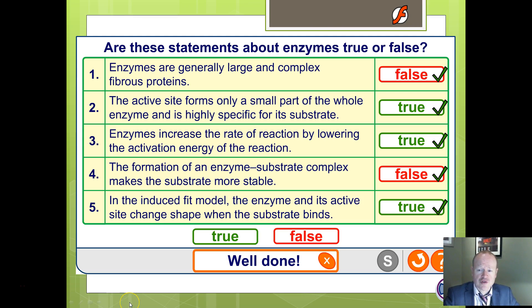Last time I left you with some true-false questions. Here are the correct answers. Enzymes are not fibrous, they are globular, so that one is false. These two are both true. Enzymes are in particular highly specific, the active site is only a small part. Enzymes do lower activation energy. This one's false because it doesn't affect its stability in any way. Whilst it forms a complex and makes it easy to react, it's not affecting its stability. And that is a good description of the induced fit model.